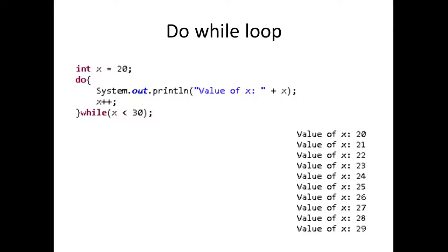Alright, so let's get into an example. We have int x equals 20. In this do-while loop, just like I said before, there's going to be an automatic execution of the code within this do block, whether or not the while loop conditional statement is true or false. The general flow is that first it's going to make its way into this do block and go System.out.println value of x plus x. So the first value printed to the console will be value of x equals 20. Then we increment by one, and then the while loop checks the current value — the value will now be 21 since x was incremented. While 21 is less than 30, which it is, we execute this block of code.